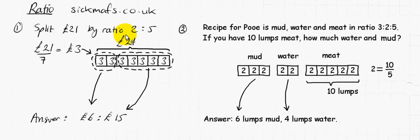21 split in the ratio 2 to 5, the answer is £6 to £15. So that 6 belongs to the 2 parts, and that 15 belongs to the 5 parts. As you can see visually, anyway. Visually, did I say that properly? Anyway.